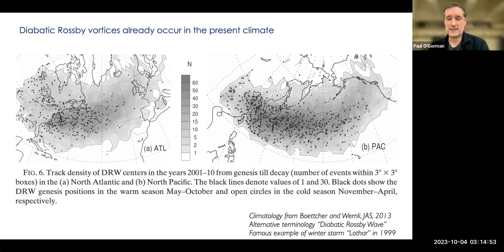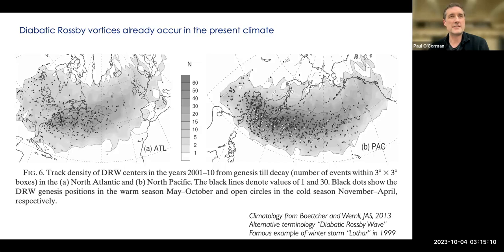Diabatic Rossby waves makes sense as a name in that these propagate quite fast and latent heating is replacing dry advection as the mechanism of propagation. That's why it makes sense — Rossby wave versus Rossby vortex. We really see these isolated structures, so it makes sense to call it a vortex, but both could make sense.